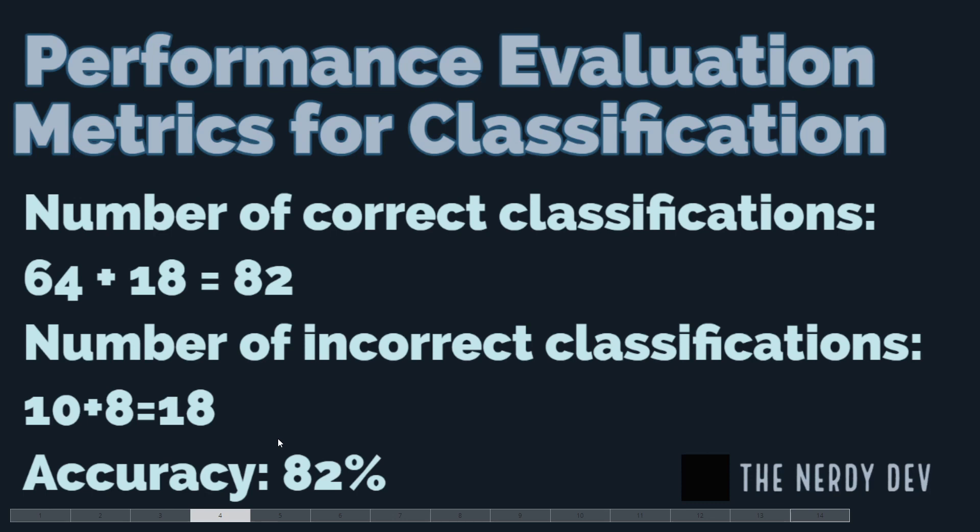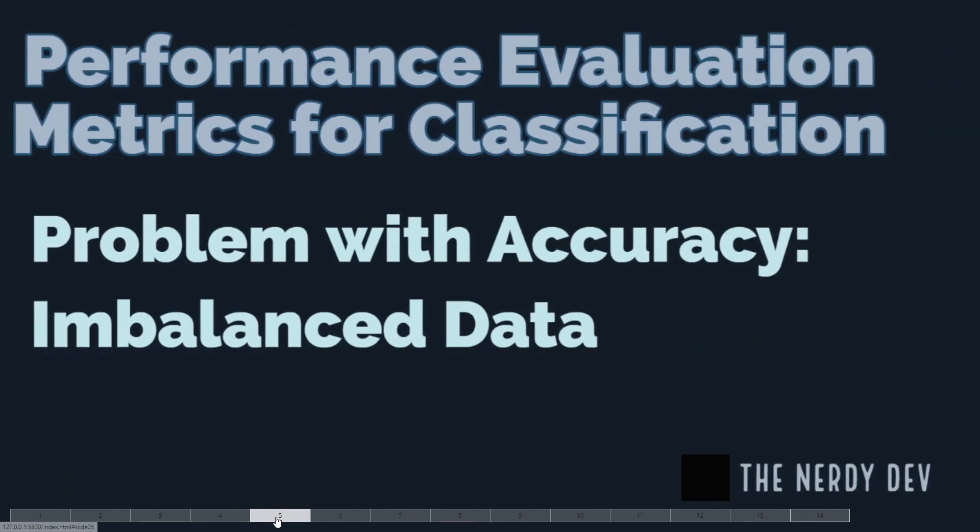Now let us understand the problem associated with accuracy as a classification metric, and that is imbalanced data. Suppose your test data set has 75% safe emails and 25% spam emails. Because of this imbalance, the model gives a false impression of high accuracy — it can achieve 75% accuracy simply by predicting every email as safe. Thus, accuracy is not a good performance metric for imbalanced data.